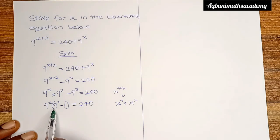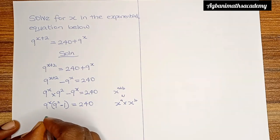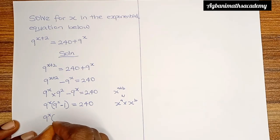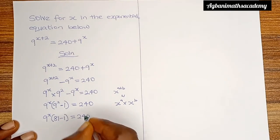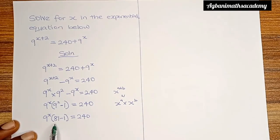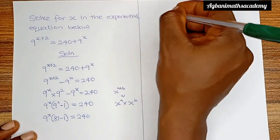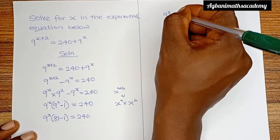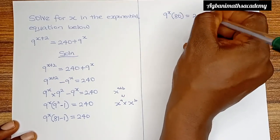Now, 9 raised to the power 2 is the same thing as 9 multiplied by 9, which is 81. So this means we have 9 raised to the power x into 81 minus 1 is equal to 240. And 81 minus 1 gives us 80, so we now have 9 raised to the power x into 80 is equal to 240.